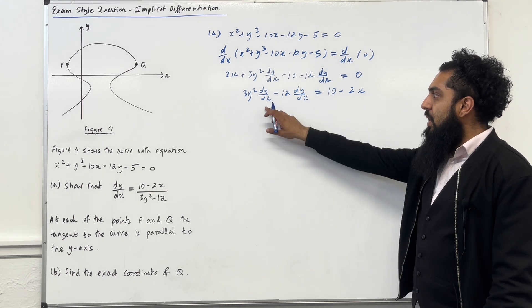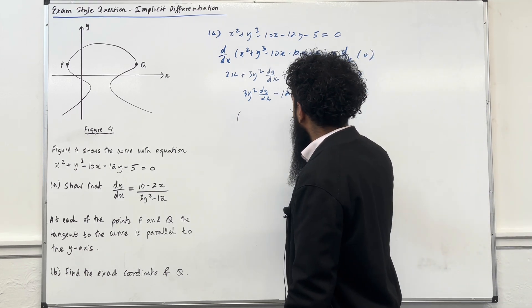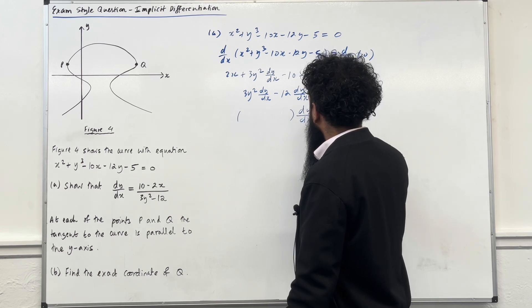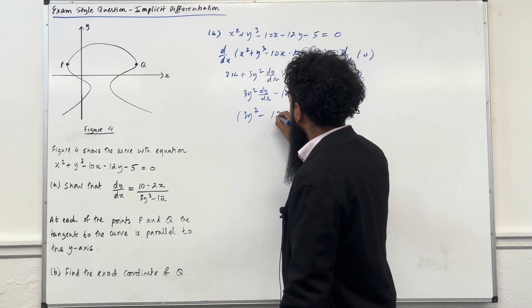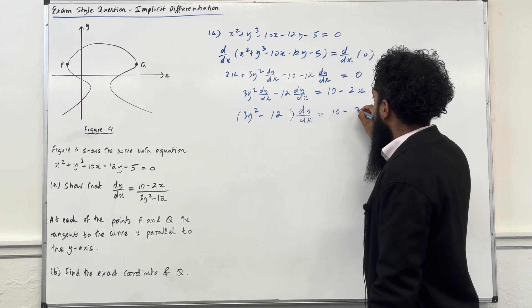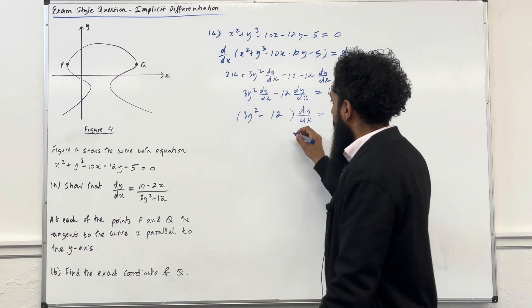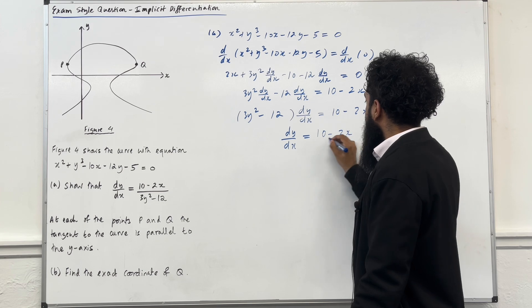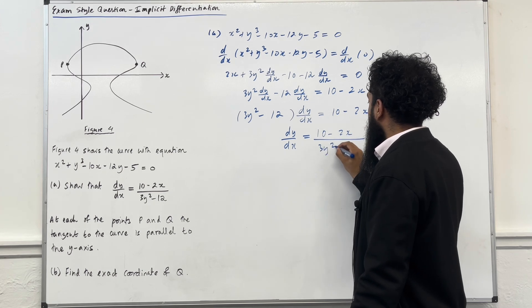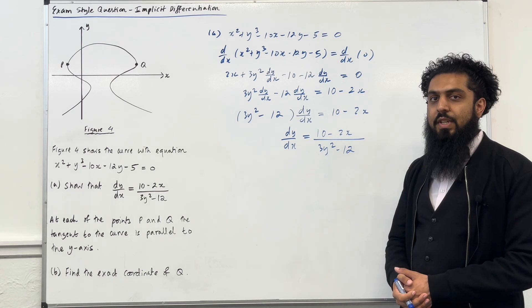Right over here, we've got dy over dx as a common factor. So I can factorise this. I can take out dy over dx as a common factor. Inside the bracket, I've got 3y squared minus 12 equal to 10 minus 2x. Now I can make dy over dx the subject. So I've got dy over dx is equal to 10 minus 2x over 3y squared minus 12, as required. This completes part A of the exam style question.